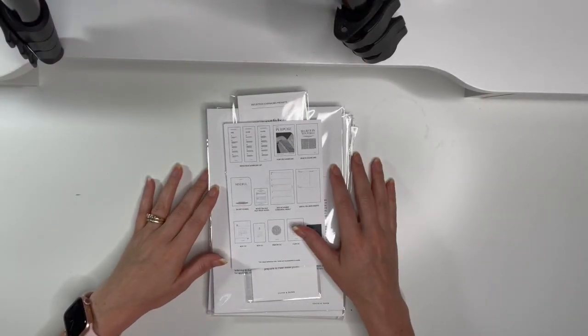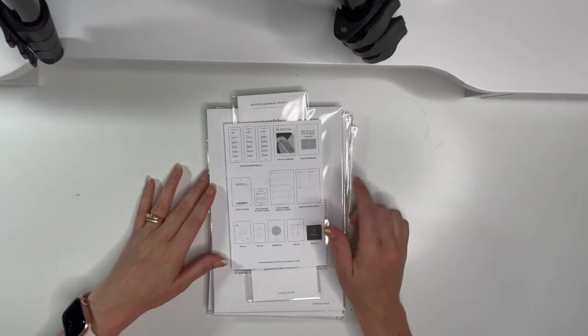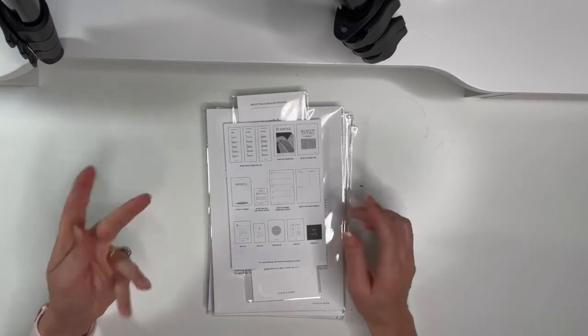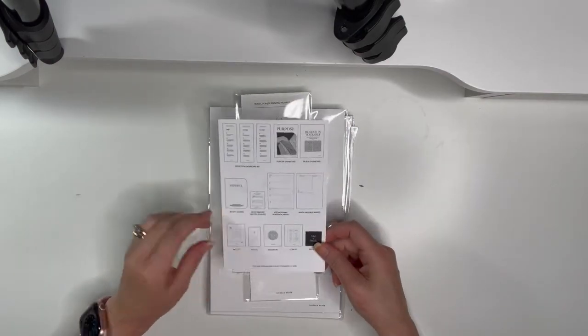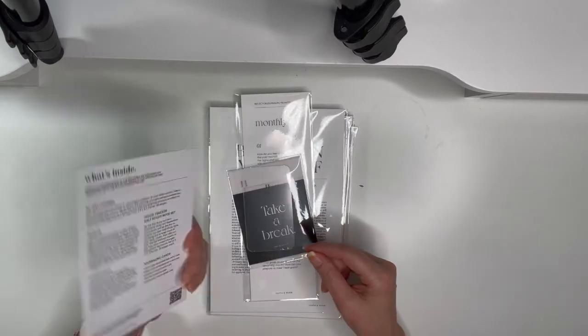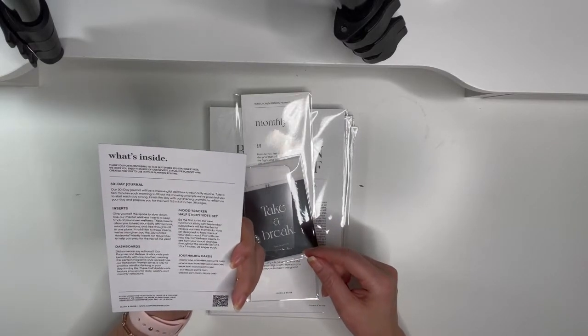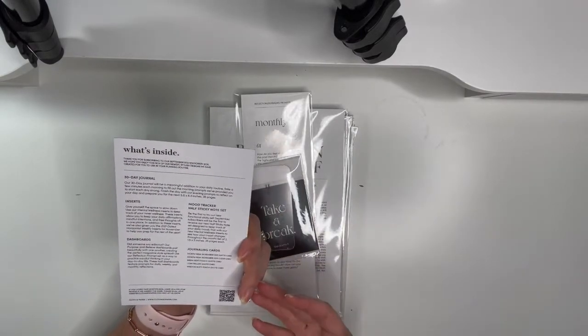Hi planner friends, it's Marcia with Buy Sell Plan. In today's video I'm going to unbox my September Cloth and Paper subscription box. They all come with this little thank you card, well I guess it's not a thank you card, but it lets you know what's inside.